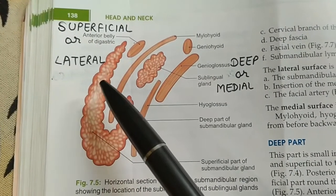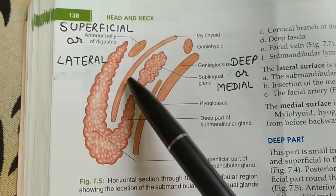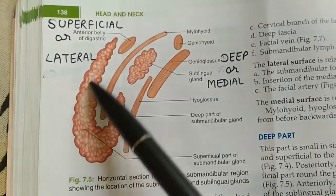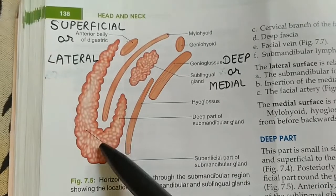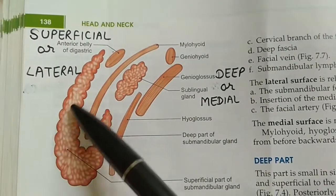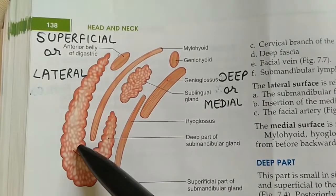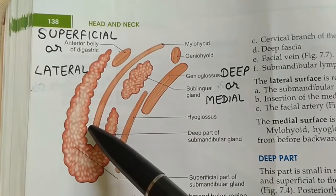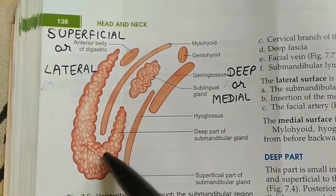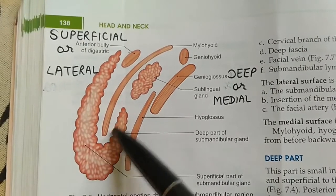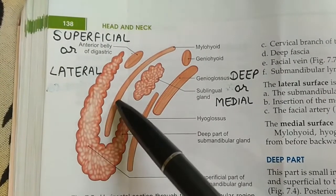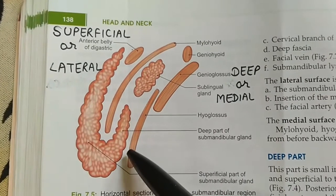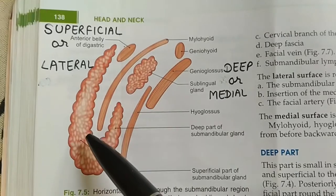This is the horizontal section showing both parts of the submandibular salivary gland. The mylohyoid muscle divides the submandibular gland into two parts: the superficial part, which is larger, and the deep part, which is smaller. The superficial part has three surfaces — lateral, medial, and inferior. Its medial surface is in contact with the mylohyoid, styloglossus, and hyoglossus muscles. The deep part's lateral surface is related to the mylohyoid muscle, and its medial surface is related to the hyoglossus muscle.